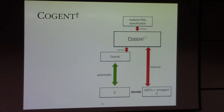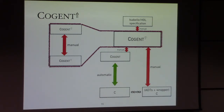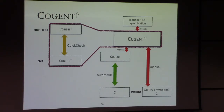If we want to shorten the distance between Cogent-up and the high-level spec, or between Cogent-up and the Cogent program, instead of a single layer of Cogent-up we can adopt a multi-layer design where each layer is a refinement of the layer above. As before, we manually establish the refinement proof between these levels, but now we can use QuickCheck in the early stage to make sure it's roughly correct. One typical setting is a non-deterministic Cogent-up and a deterministic one. The non-deterministic Cogent-up is very close to the non-deterministic Isabelle spec.